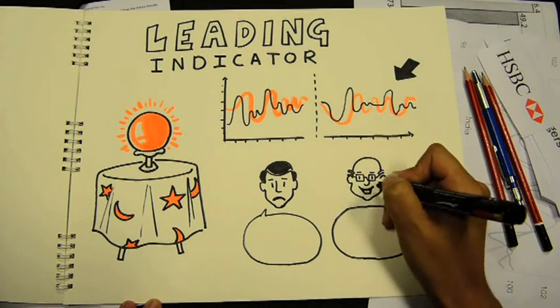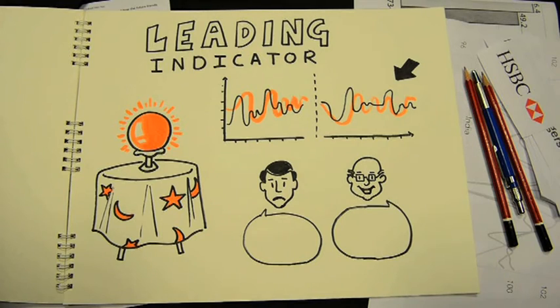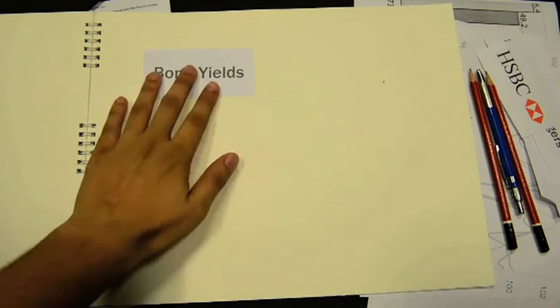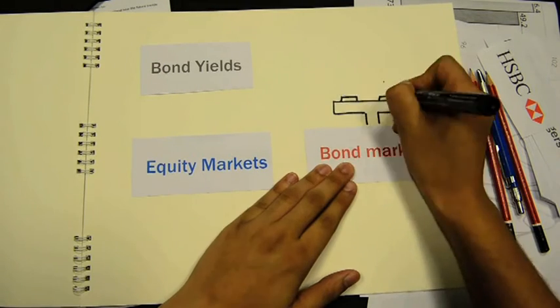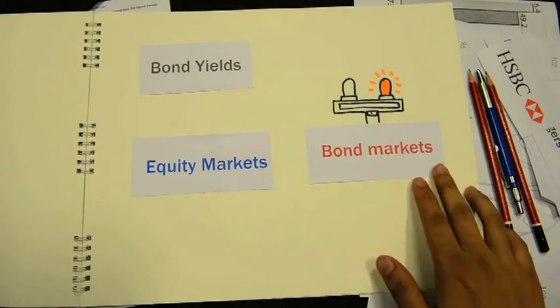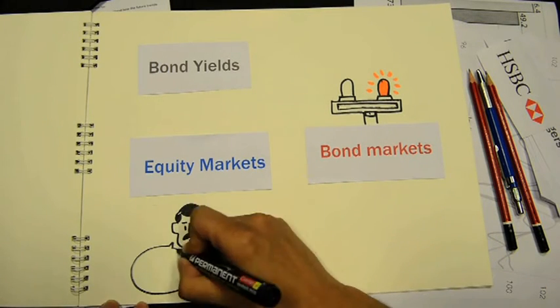In other words, the PMI data is more of a sentiment indicator. Another leading indicator commonly used is bond yields. Bond markets are traditionally considered to be ahead of equity markets in terms of signaling a future trend, but here too it's more about bond market participants' expectations than reality.